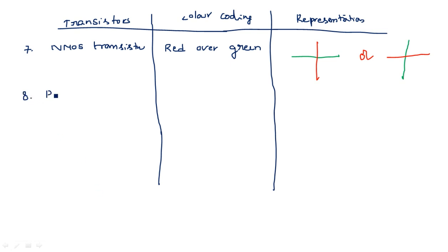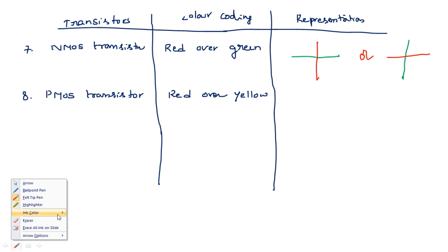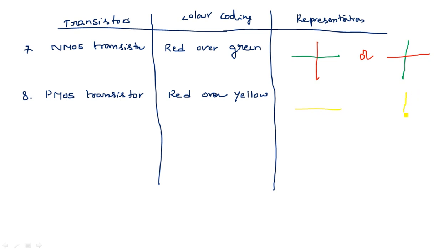For the PMOS transistor, the color coding is red over yellow. Yellow represents P-plus diffusion and red represents polysilicon. You draw a yellow horizontal line and a red vertical line — or vice versa — to represent the PMOS transistor.